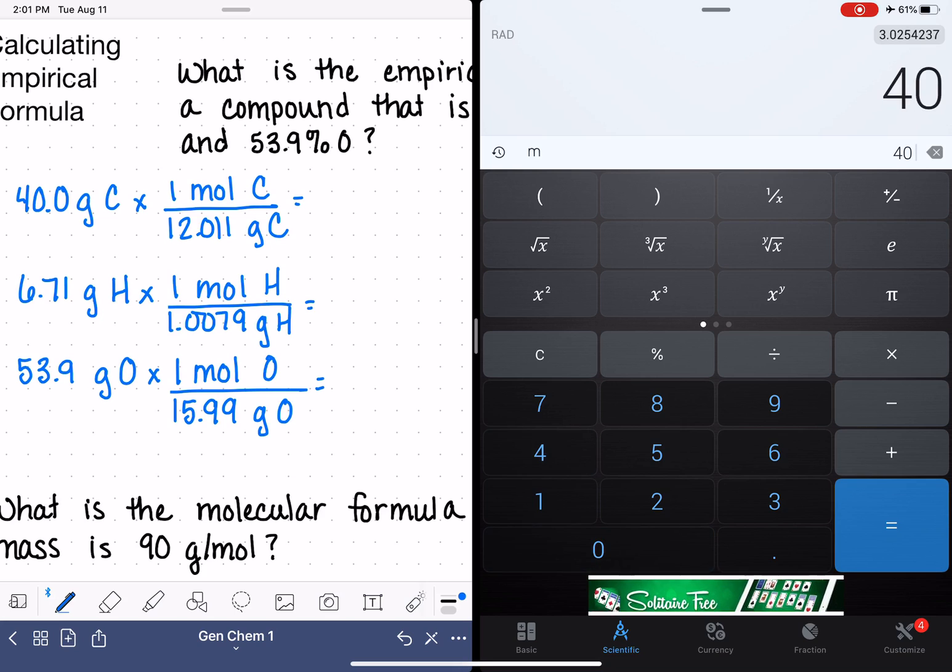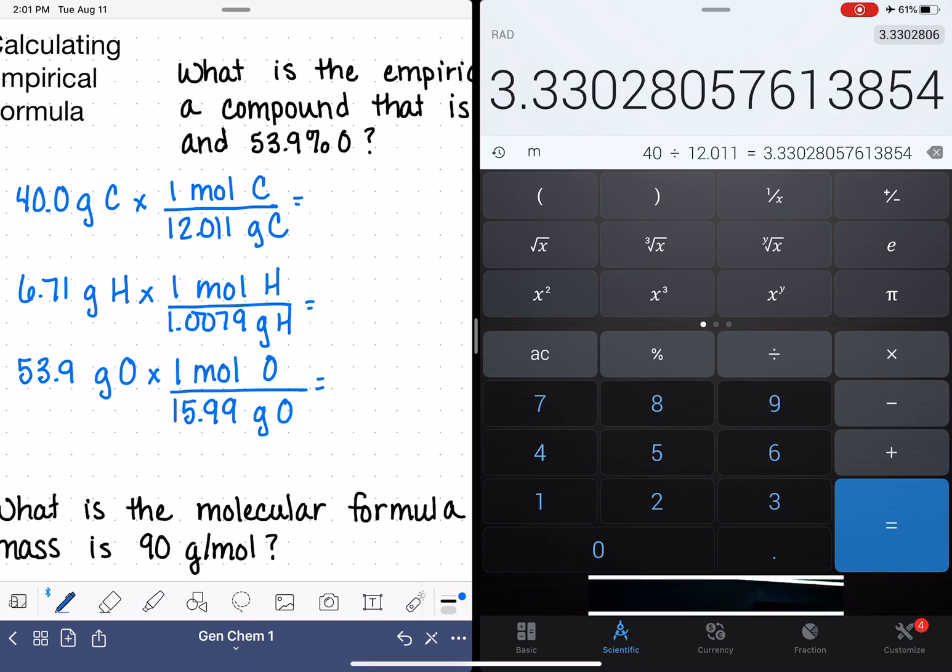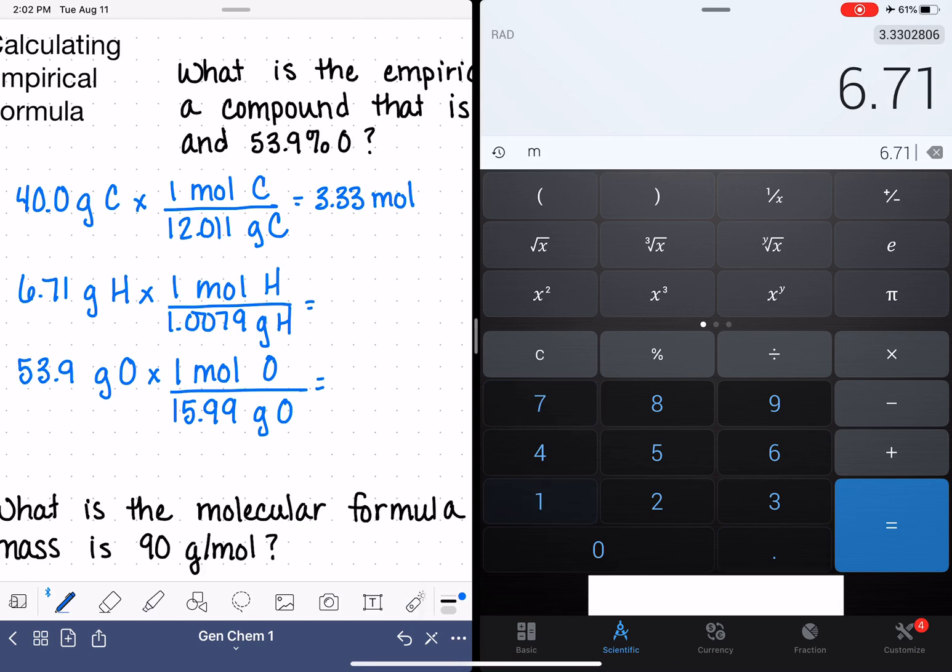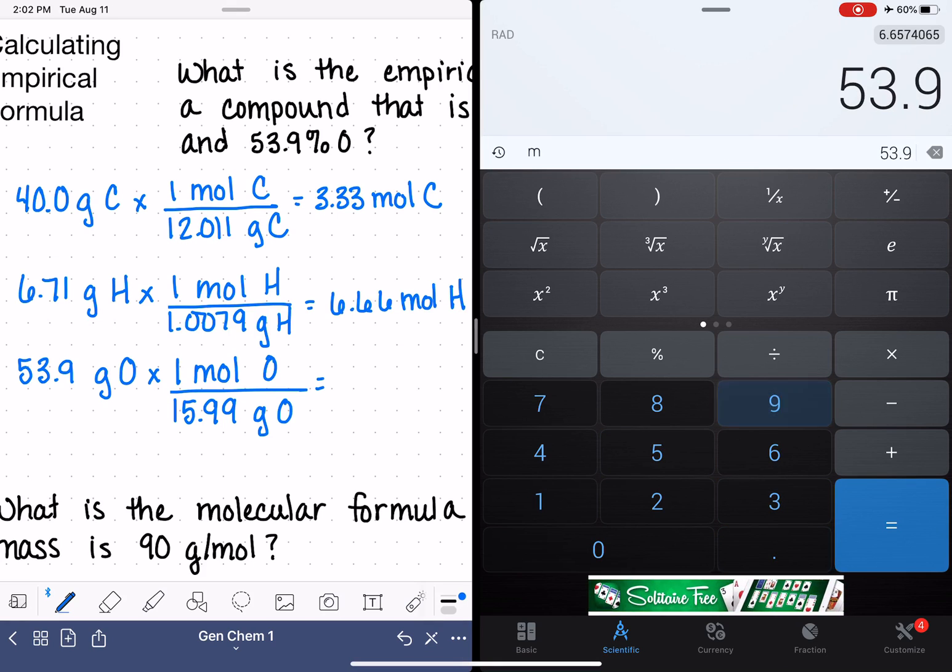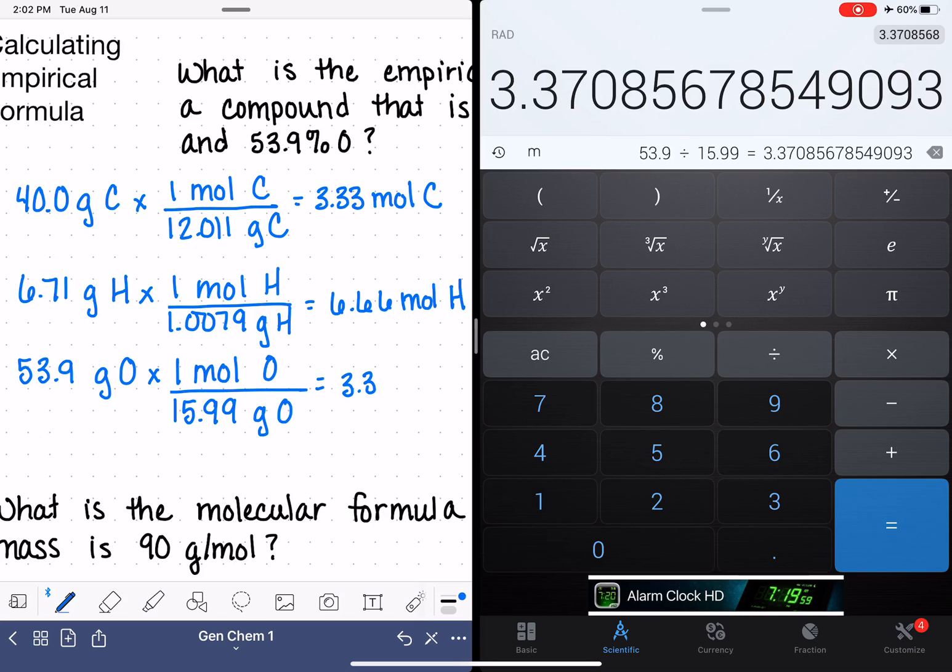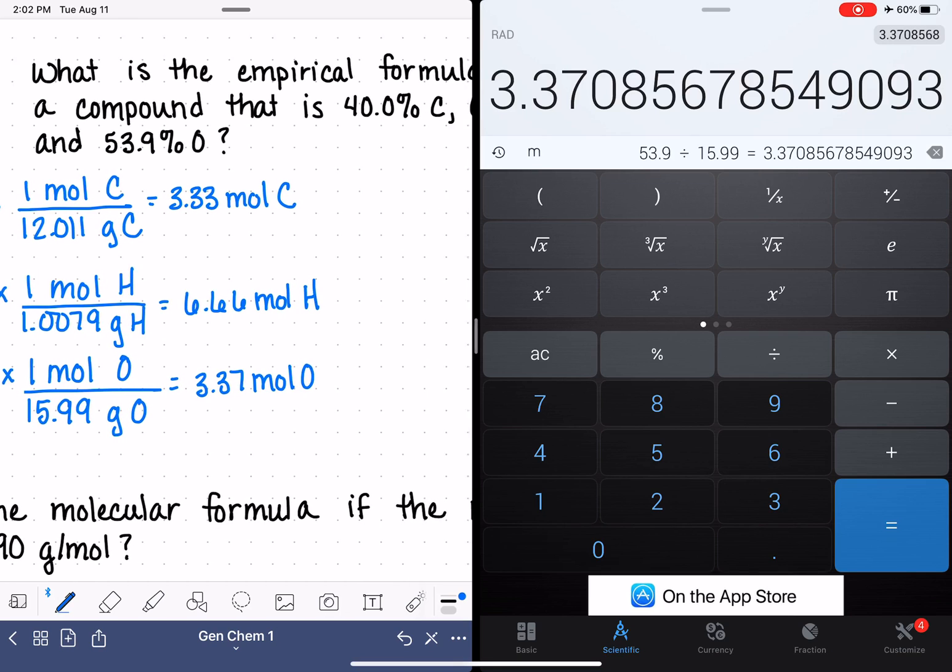40 divided by 12.011 is 3.33 moles. 6.71 divided by 1.0079 is 6.66 moles. And 53.9 divided by 15.99, 3.37 moles of oxygen.